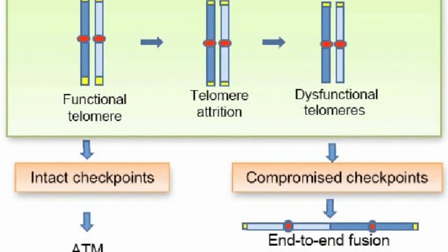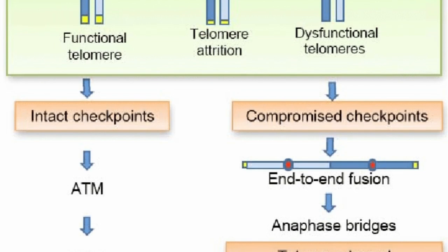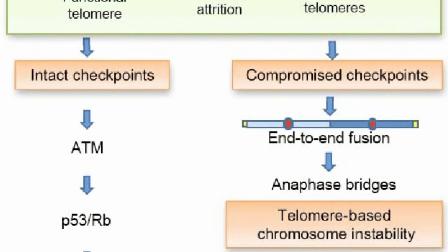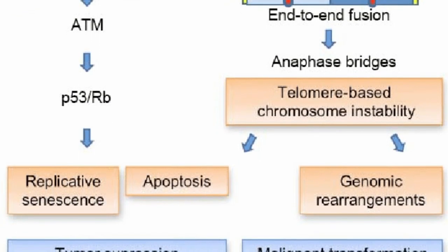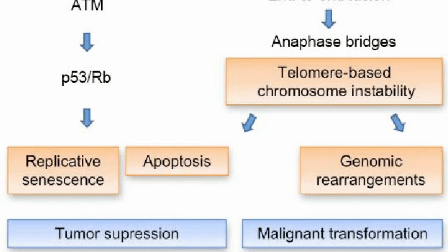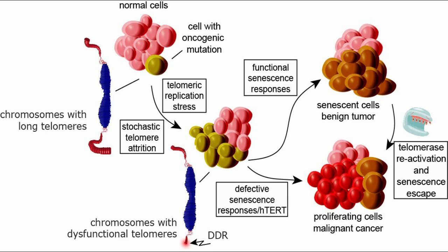The obvious solution would be to simply lengthen the telomeres. However, that does not come without its drawbacks. It is theorised that one of the reasons why telomeres degrade and appear to have this inbuilt lifespan via the Hayflick limit is to stop cells from dividing uncontrollably. In fact, one of the ways cancers become malignant is by bypassing the normal restriction on cell division. They do this by upregulating an enzyme known as telomerase.